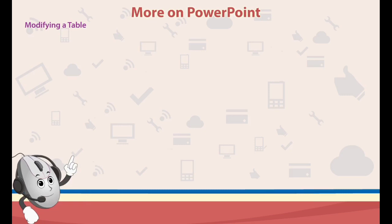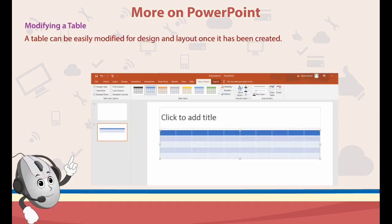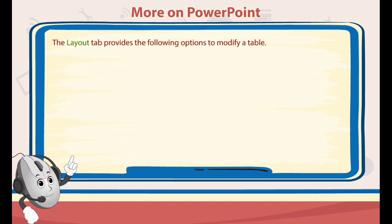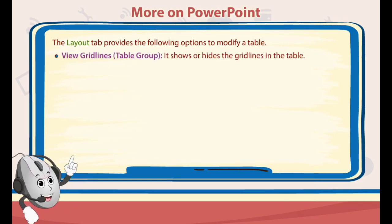Modifying a Table. A table can be easily modified for design and layout once it has been created. 1. Click on the table to modify its structure. 2. New tabs will appear on the ribbon. The Design tab is used to format a table. The Layout tab provides the following options to modify a table. 3. View Gridlines — it shows or hides the grid lines in the table.